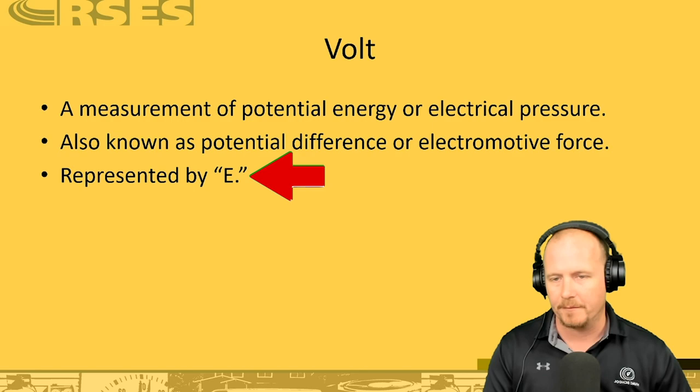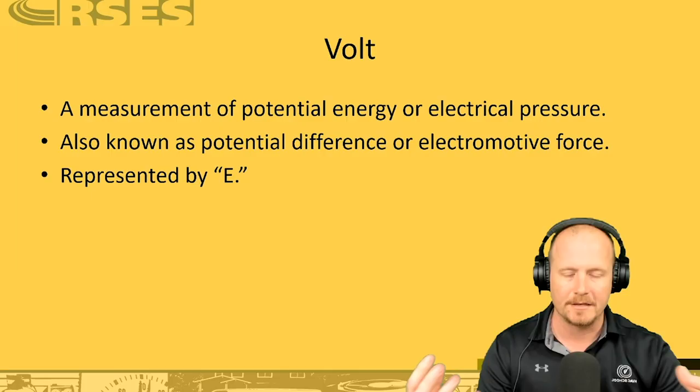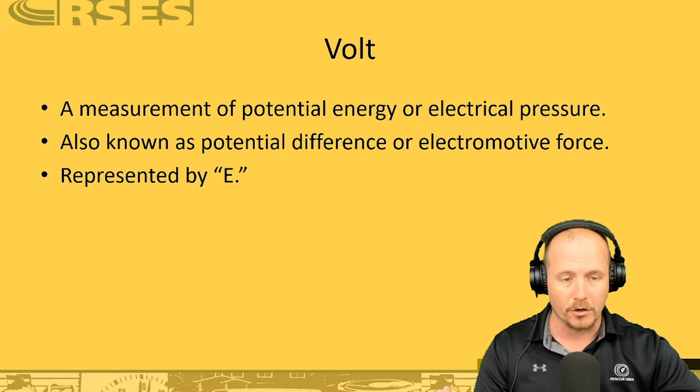Voltage is always in terms of a differential. I like to think in terms of a ball rolling down a hill — high voltage goes to low voltage. You have to have a difference in potential energy for a ball to roll down a hill, just as there has to be a difference in gravitational energy between the valley and the top of the hill. In the same way, you have to have a difference in voltages for electron charges to move from one point to another. That's what a volt is.